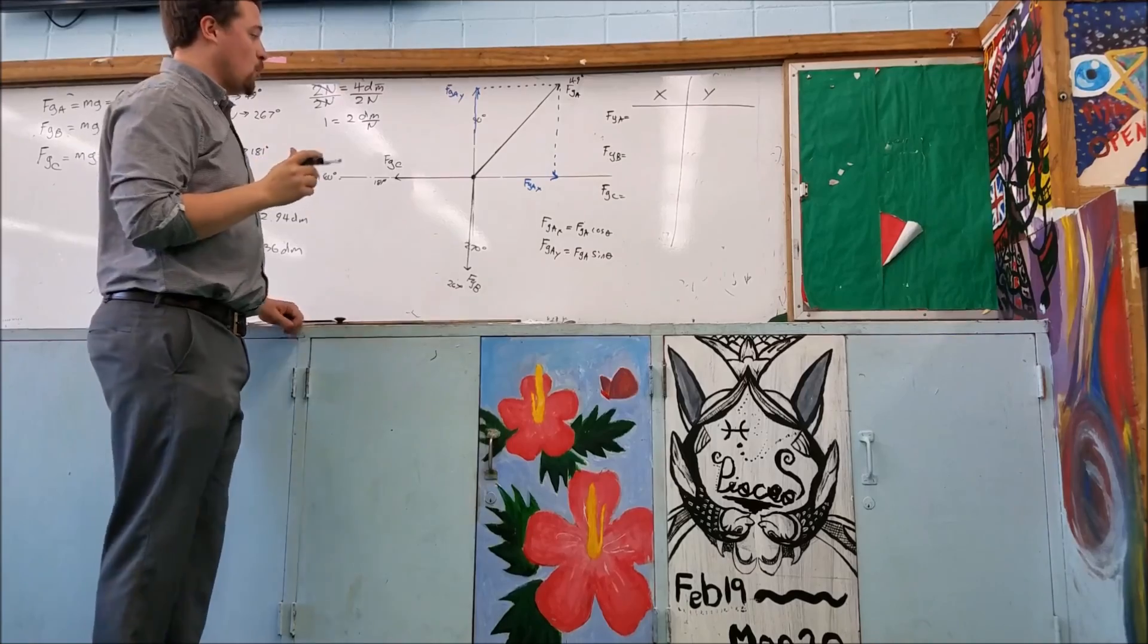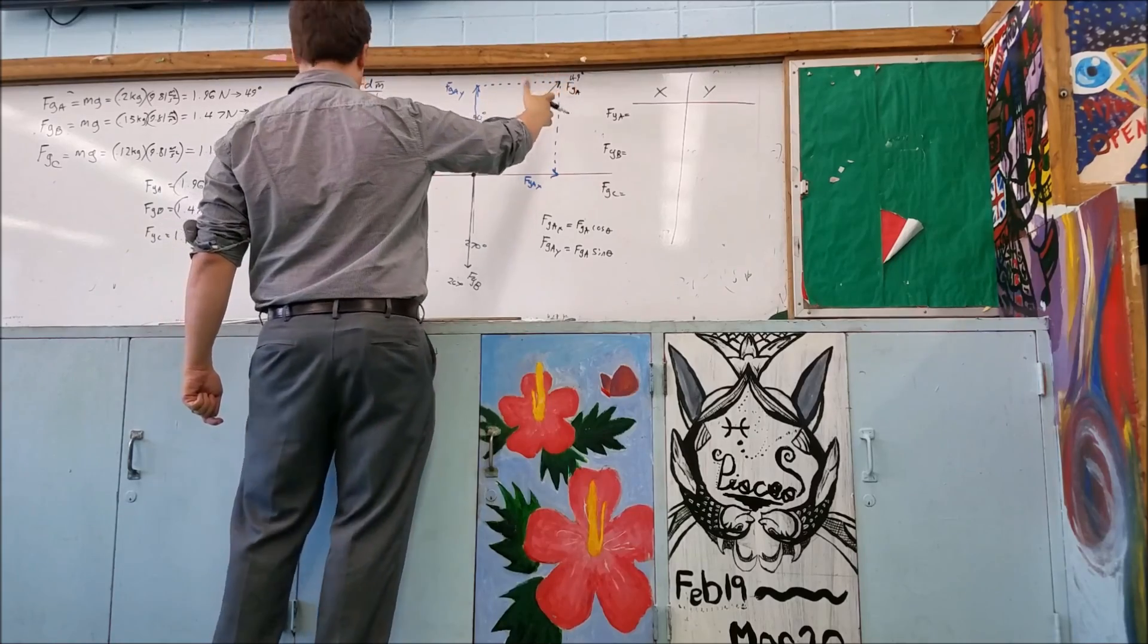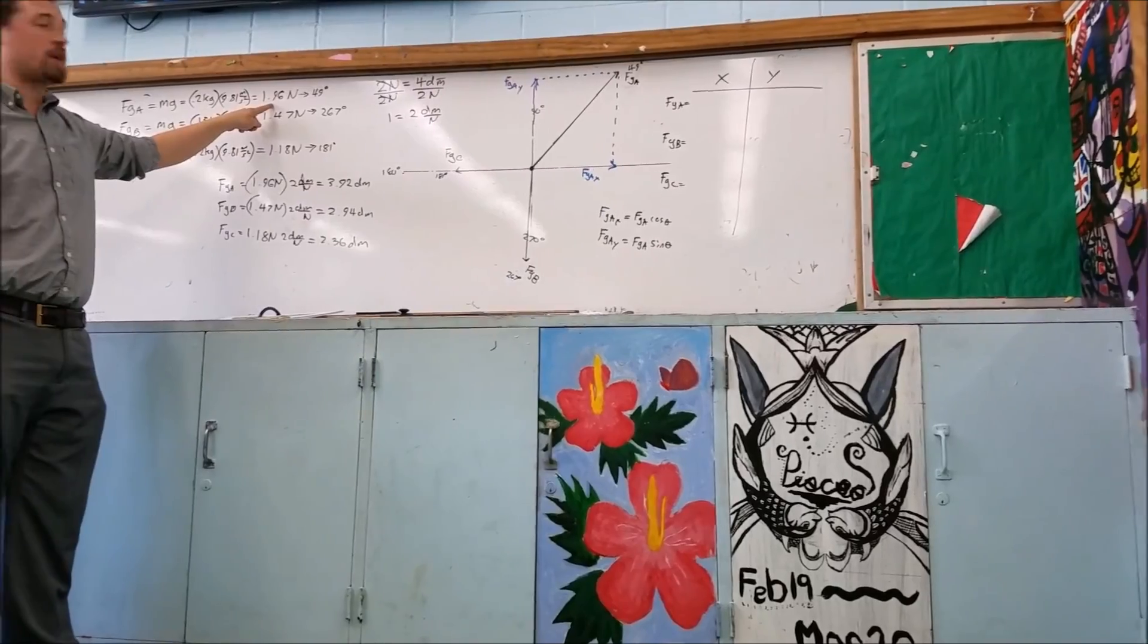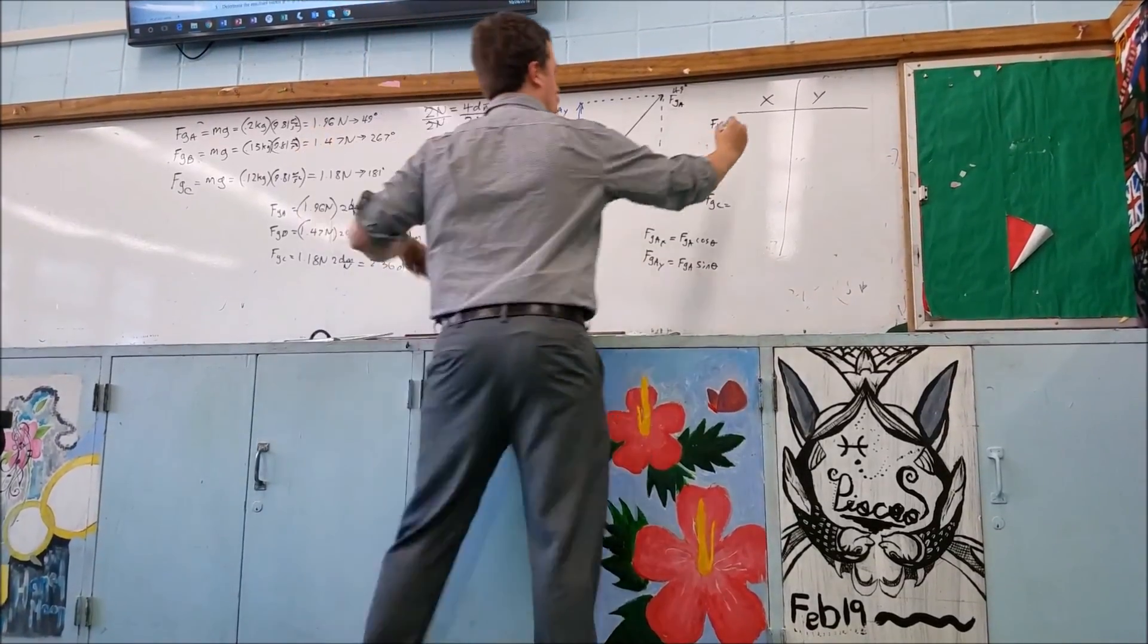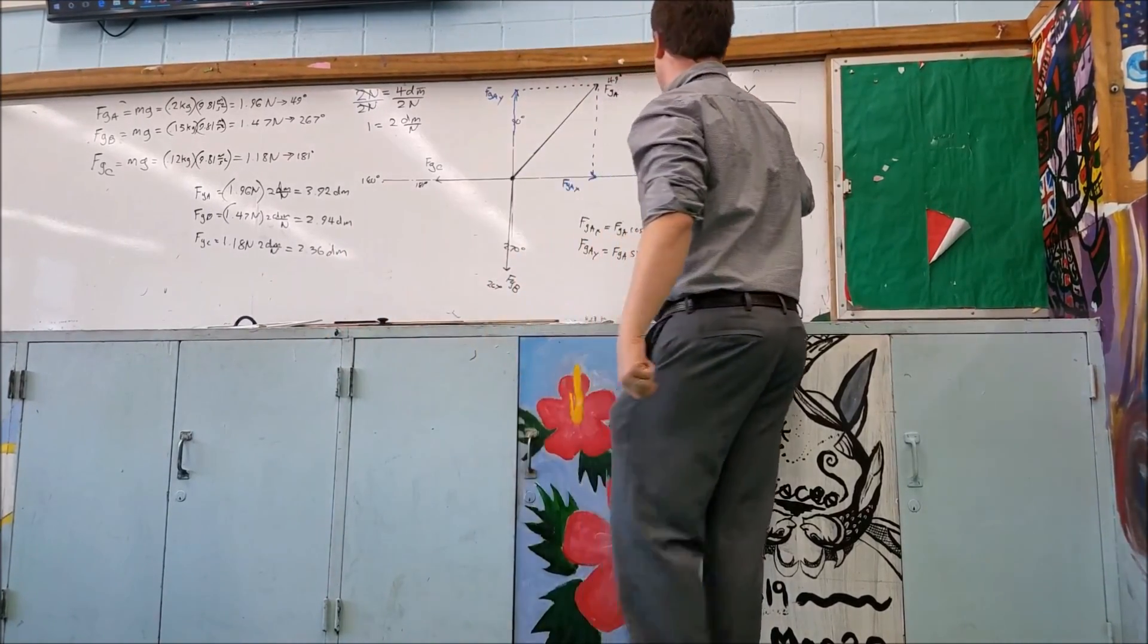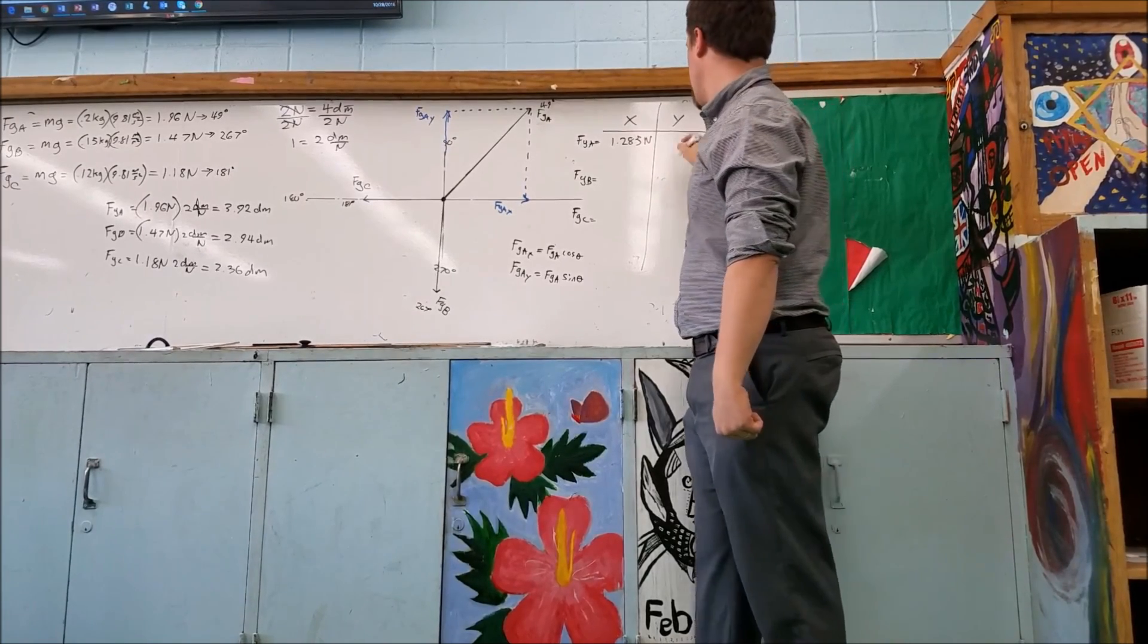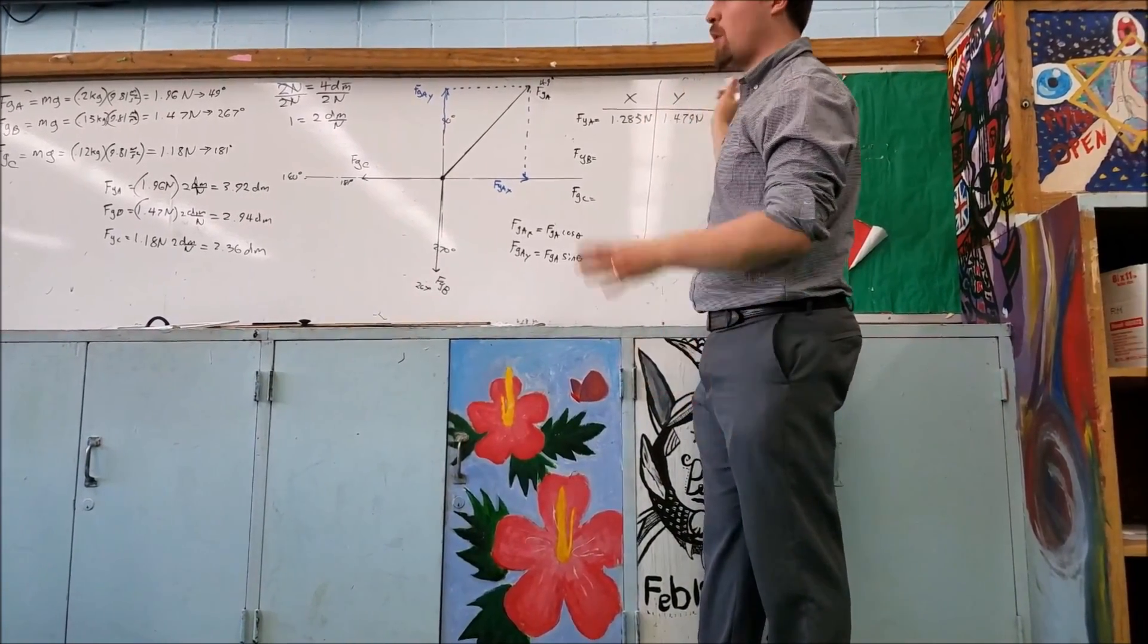So this is where I'll need some calculator help. So what is the cosine of 49 degrees times, what was this thing? This was 1.96 newtons, times cosine of 49. So take cosine of 49 times it by 1.96. 1.285 newtons. What about, so what would be the sine of 49 times 1.96? 1.479 newtons. And we really only need these two digits, so if you want to do three digits, it doesn't matter.